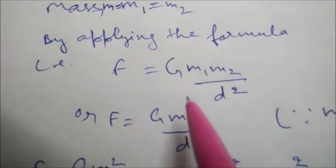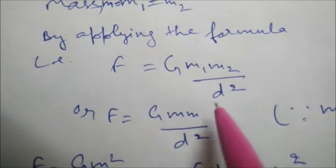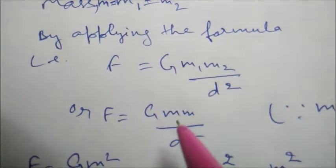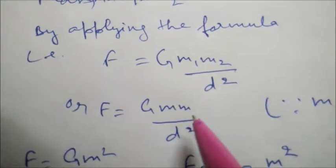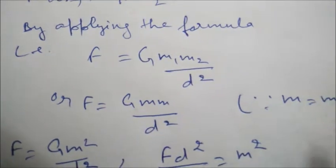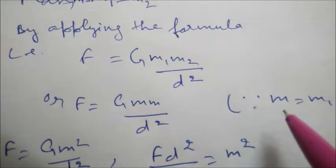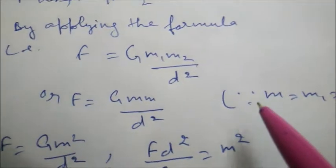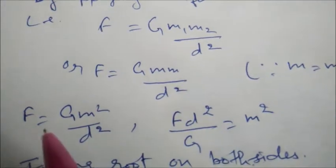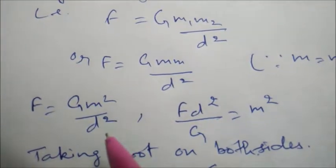Here we will take M1 and M2. We will write M and M because both are identical and we have assumed both are equal to M. So it will become F equals G M squared upon D square.